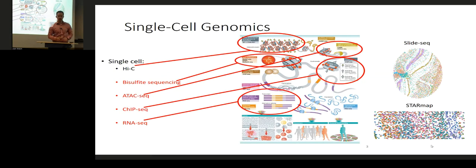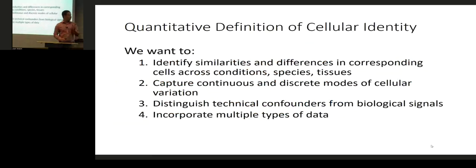We can measure expression — single-cell RNA-seq is by far the most widely used method for measuring single-cell properties. You can also do single-cell methylation sequencing and ATAC-seq, which gives you chromatin accessibility measurements. You can also do Hi-C, and most recently people have started doing spatial transcriptomics, where you have a 2D or 3D coordinate for the cell along with its gene expression profile. The grand goal was to leverage all these different types of measurements across a range of biological settings to move toward a quantitative definition of cellular identity.